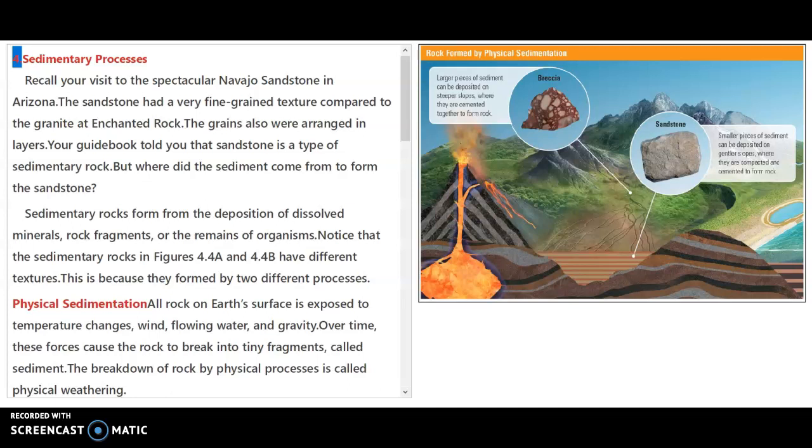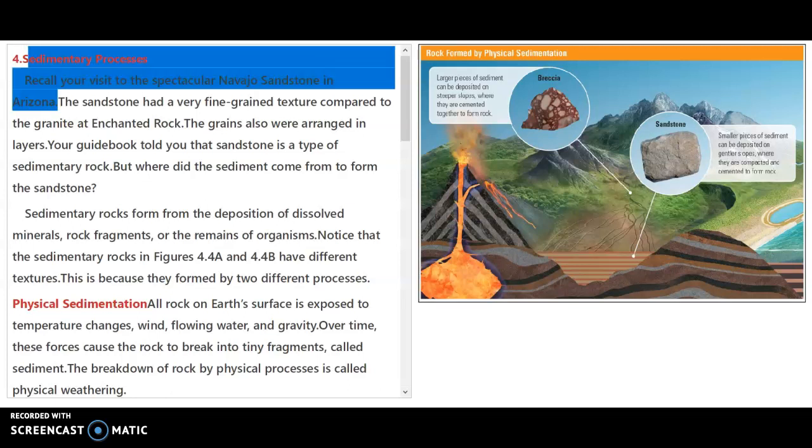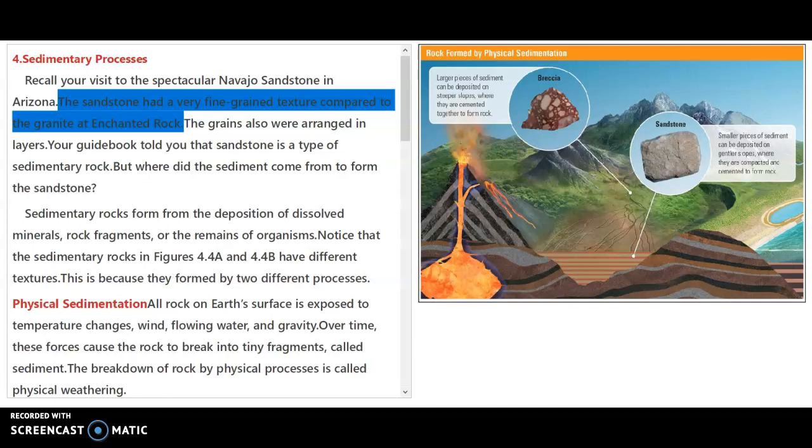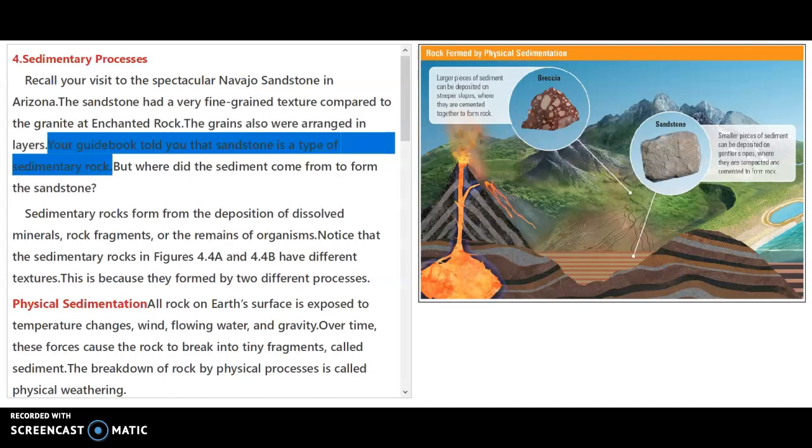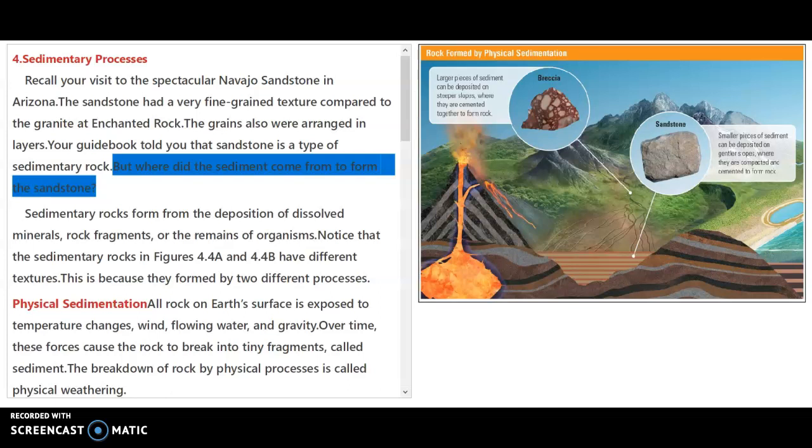This section is on sedimentary processes. Recall your visit to the spectacular Navajo sandstone in Arizona. The sandstone had a very fine grain texture compared to the granite at Enchanted Rock. These grains were arranged in layers. Your guidebook told you that the sandstone is a type of sedimentary rock, but where did the sediment come from to form the sandstone?